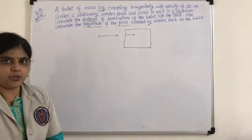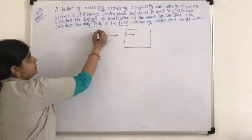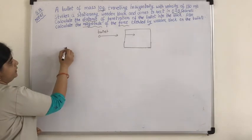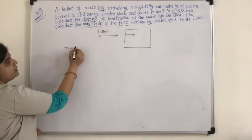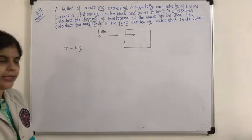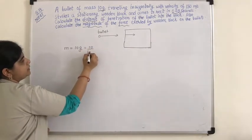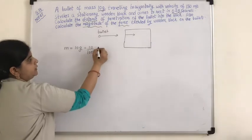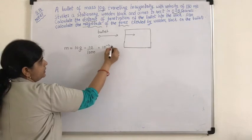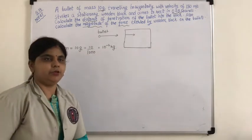First we will write what we are given and what we need to find out. The mass of the bullet is 10 grams. You have to convert it into SI units, so 10 grams means 10 upon 1000 kg, or that will be 10 to the power of minus 2 kg. So we have converted into SI units.